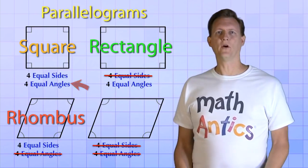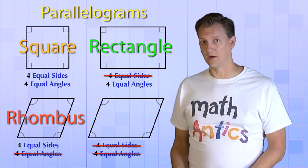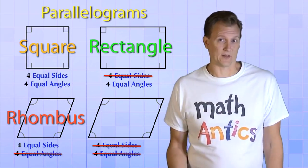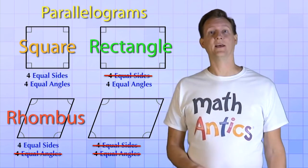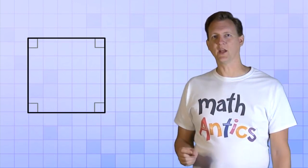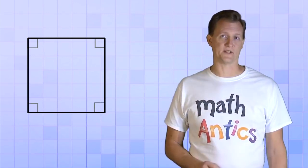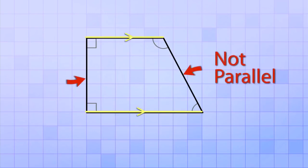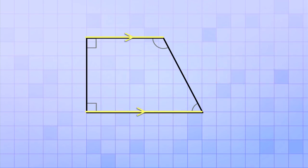Okay then, if all the quadrilaterals we've seen so far are examples of parallelograms, what's an example that's not a parallelogram? Well to see one, let's start over with our square again, but this time we're going to change it by moving just one of its vertices, like so. Now, one of the pairs of sides is still parallel, but the other is not, and a quadrilateral that has only one pair of parallel sides is called a trapezoid.